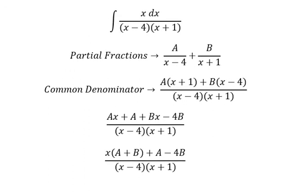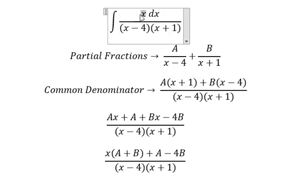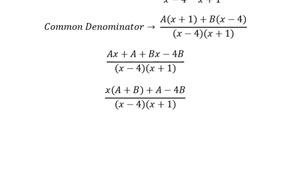We look at the coefficients. We just have only x, that means A plus B equals to 1. A minus 4B equals to 0 because we don't have the constant term.